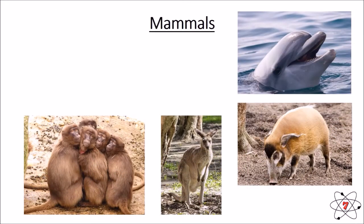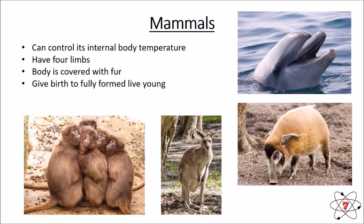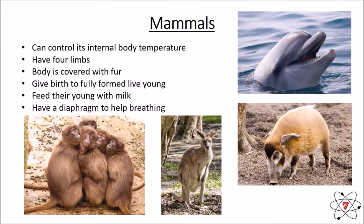As humans, we are mammals. One of the key features of mammals is that we can control our internal body temperature — if we're too hot we can cool ourselves down, if we're too cool we can warm ourselves up. All mammals have four limbs; in humans we have two legs and two arms, though in dolphins and whales it's a little harder to spot. Mammals have a body covering of fur, and they give birth to fully formed live young. Mammals also feed their young with milk — no other class does this — and they have a diaphragm under their lungs to help them breathe.